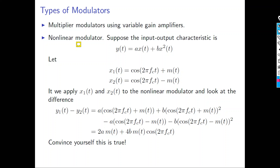The first type of modulator we talk about is the multiplier modulator. The multiplier modulator is the most basic modulator — you take your message signal and multiply it by the carrier to get the modulated signal.